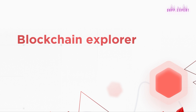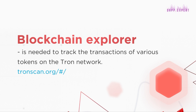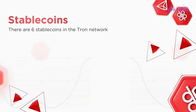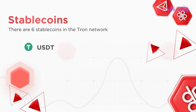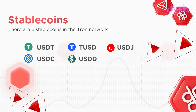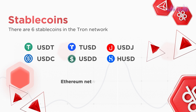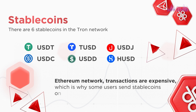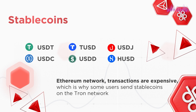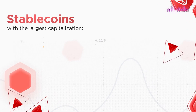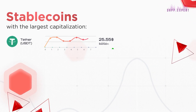Blockchain Explorer: A blockchain explorer is needed to track the transactions of various tokens on the Tron network. Stablecoins: There are six stablecoins in the Tron network — USDT, USDC, TUSD, USDJ, and HUSD. On the Ethereum network, transactions are expensive, which is why some users send stablecoins on the Tron network. The largest capitalization in the Tron network is the stablecoin USDT at $29.48 billion.